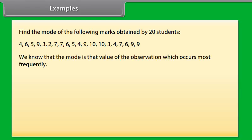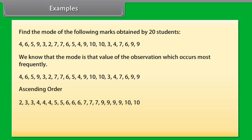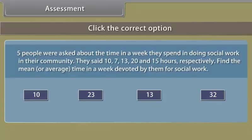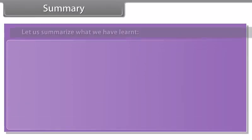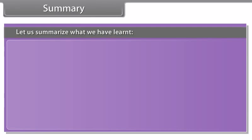Find the mode of the following marks out of 10 obtained by 20 students. We know that the mode is that value of the observation which occurs most frequently. Let's arrange these marks in ascending order. We can see that 9 is occurring more frequently, so we can say that 9 is the mode of the marks.